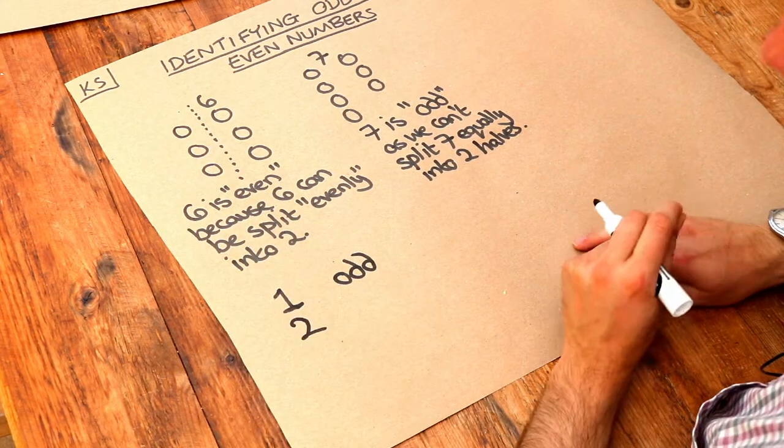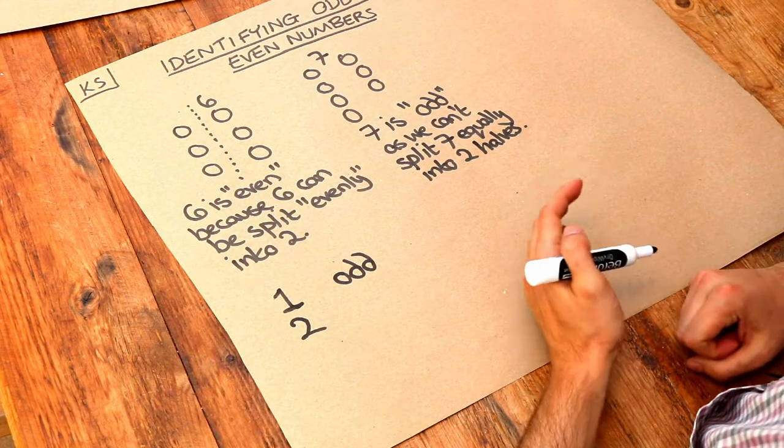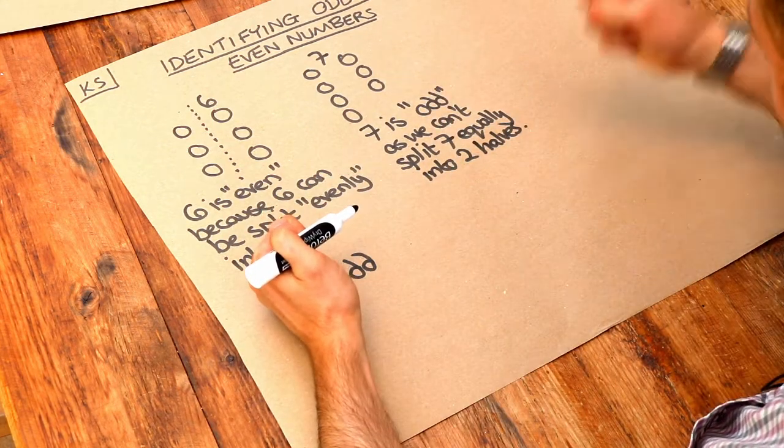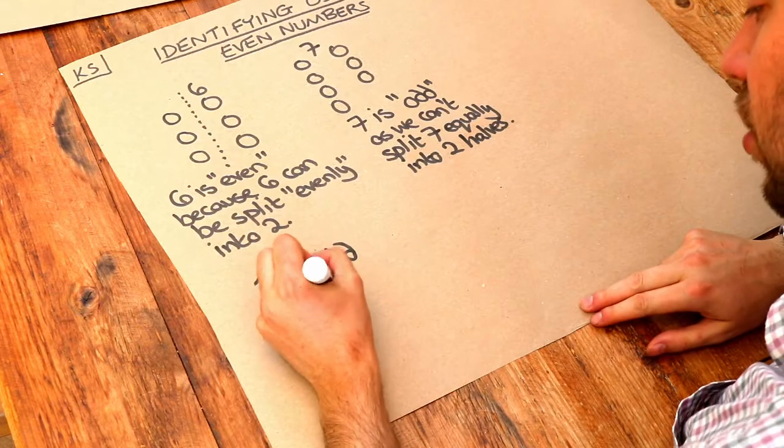What about two, if you had two people, yes you could split it into two equal parts. You have one person on one team, one person on the other team, so two is even.